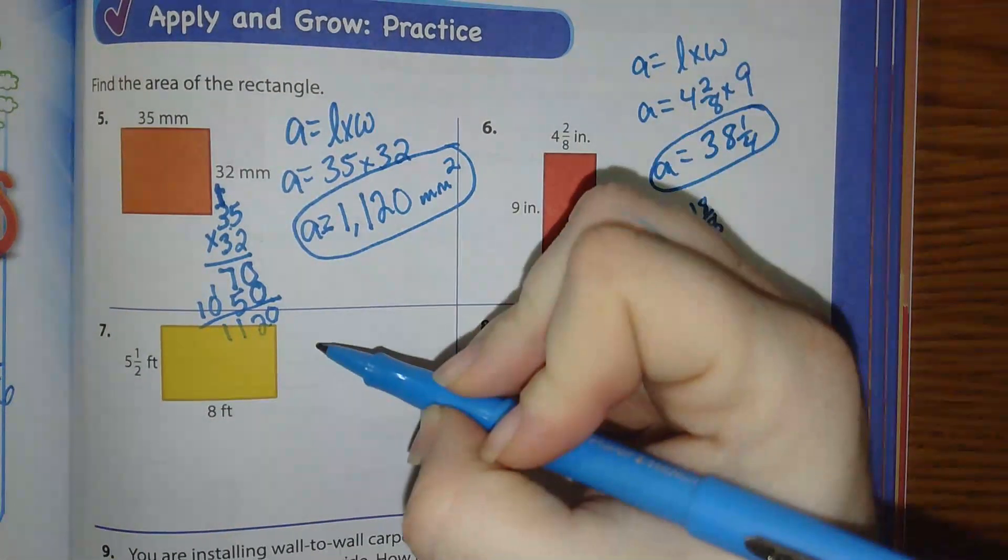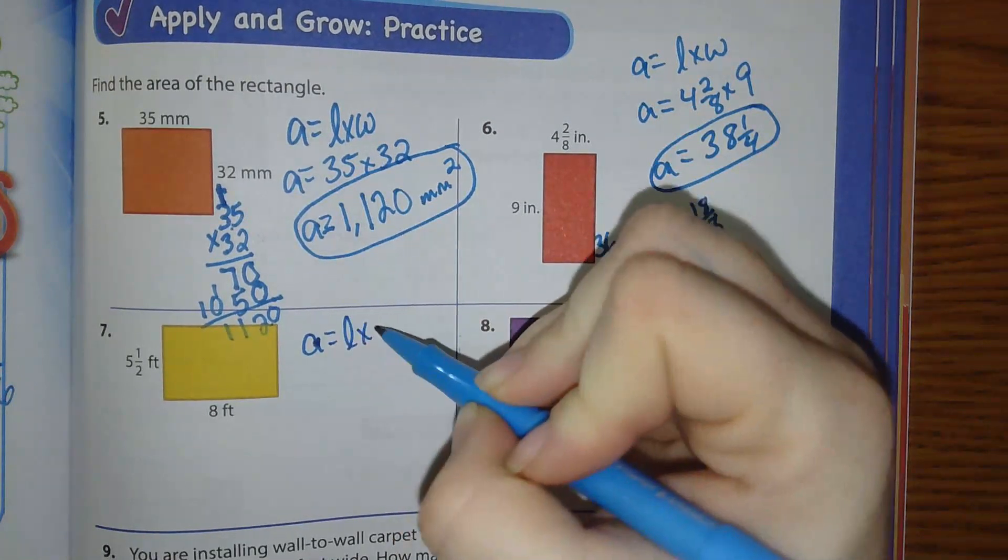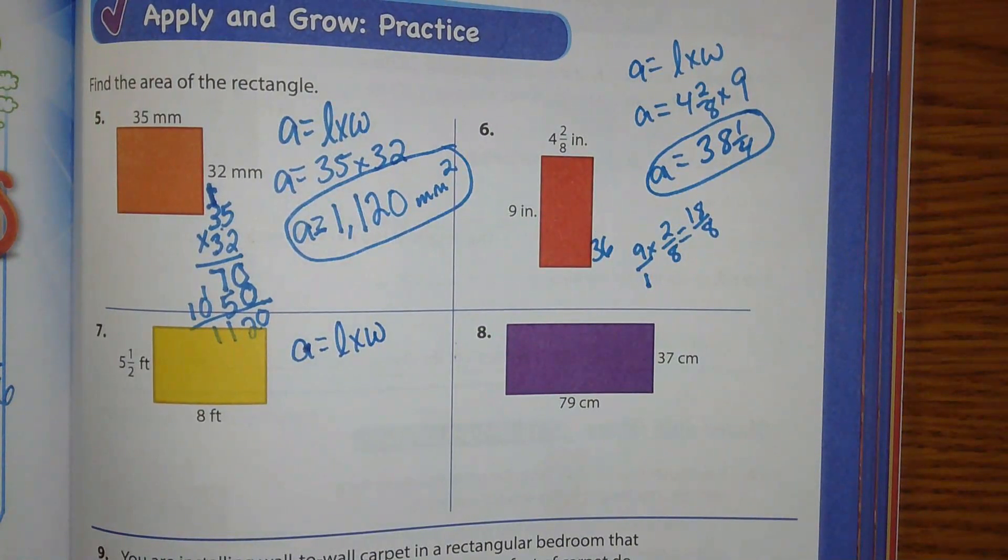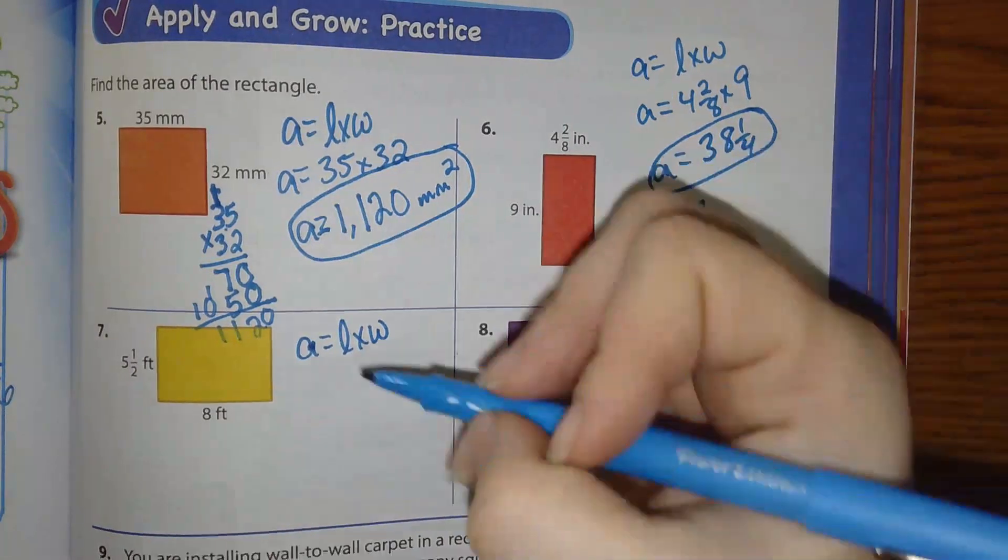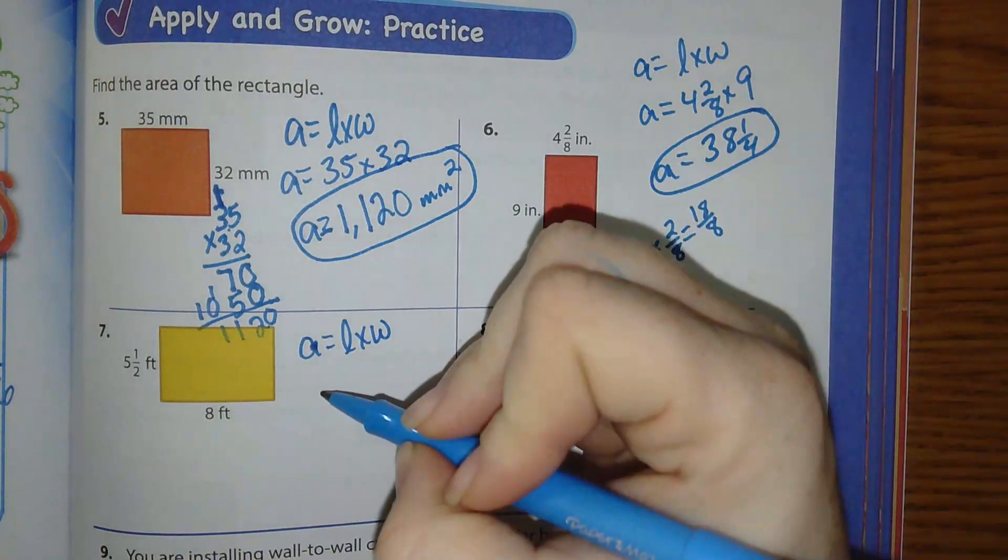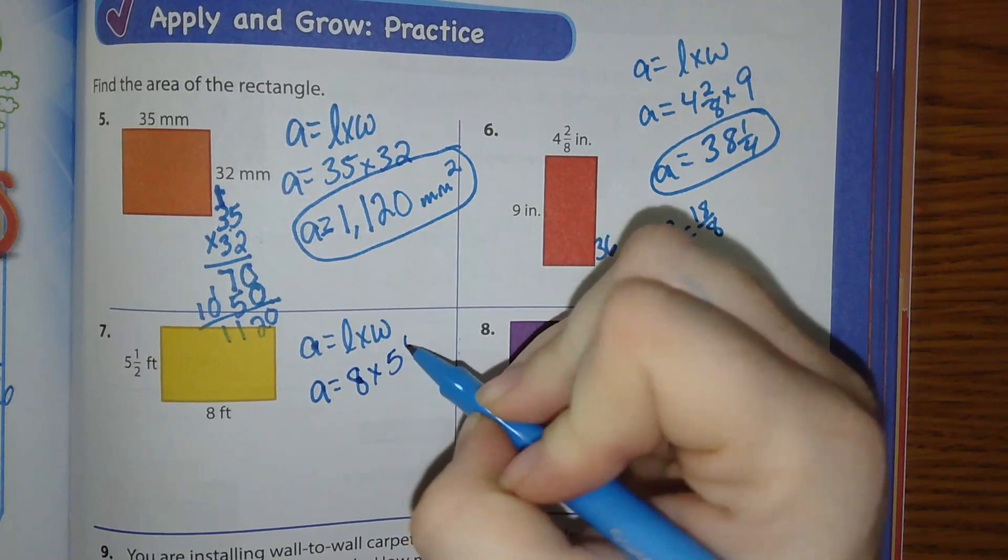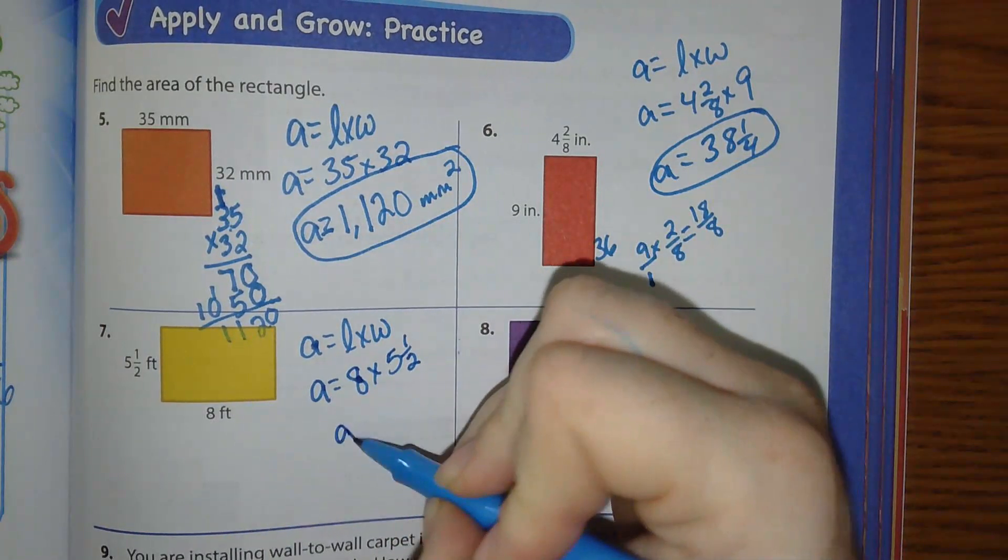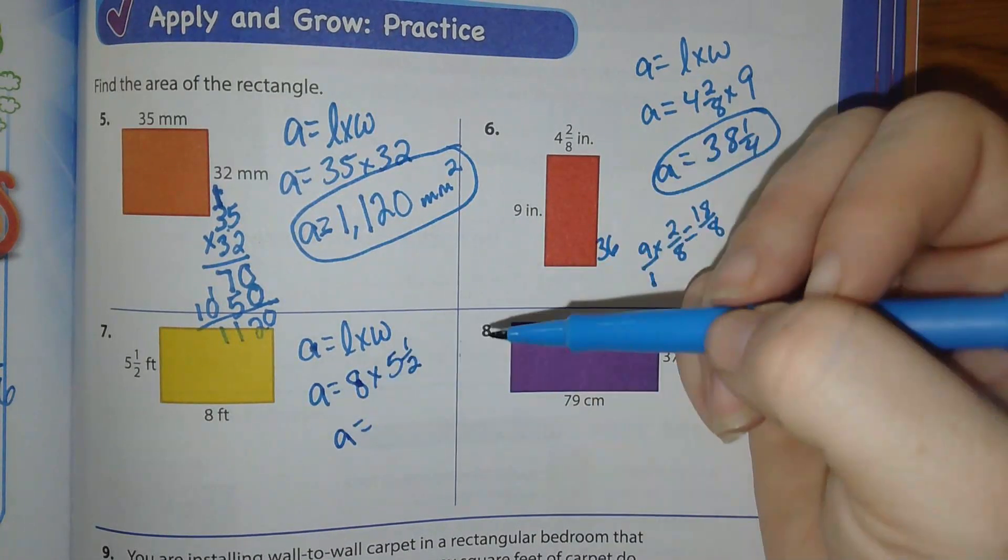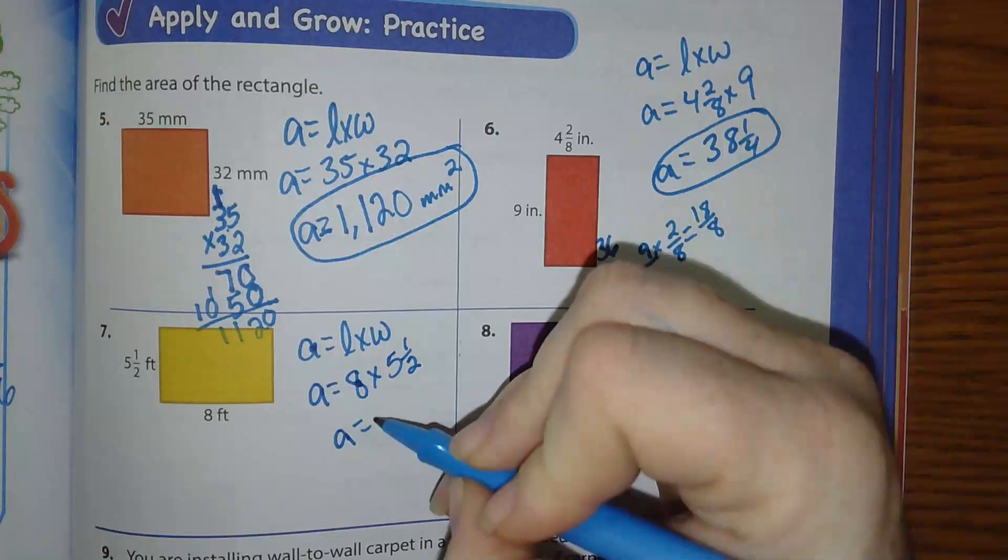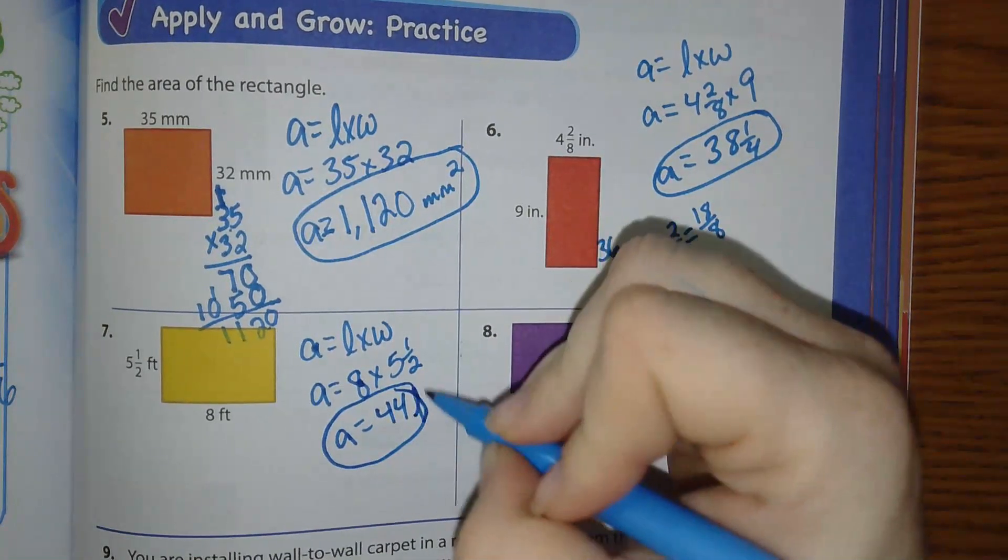Number 7. A equals L times W. A equals 8 times 5 and 1 half. A equals. I know that 8 times 5 is 40. Half of 8 is 4. So my answer is 44. 44 feet squared.